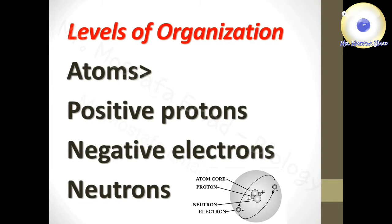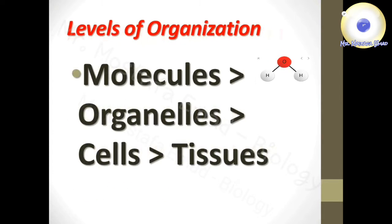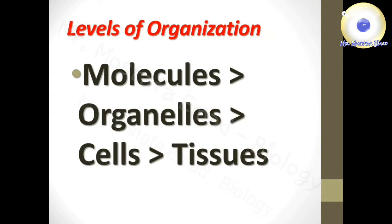Atoms are the smallest units of matter. They contain smaller particles: positive protons, negative electrons, and neutrons which have no charge. These atoms together build up molecules, which are arranged in special forms to make organelles.